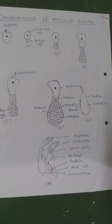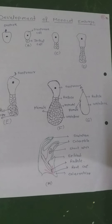Finally, the ovule is transformed into the seed and the ovary into the fruit. This is the development of embryo in dicotyledonous and monocotyledonous plants. Thank you.